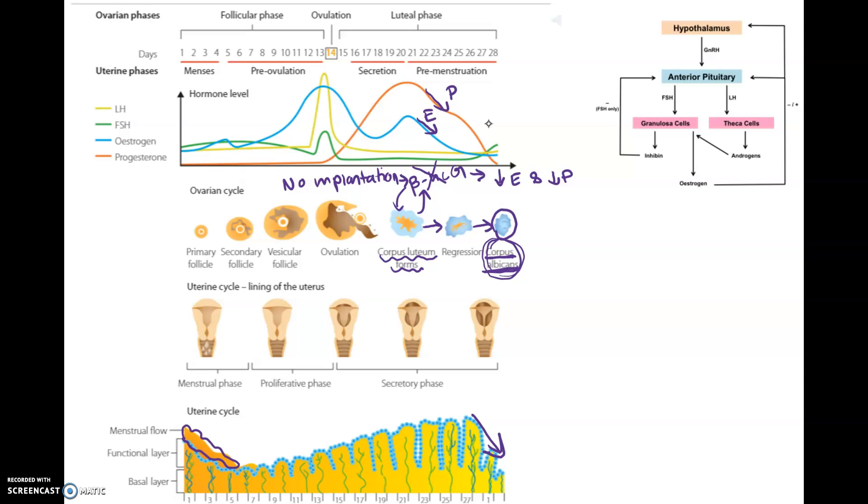To sum it all up, the way you approach this graph is you should note that estrogen will slowly increase to about day 14, and then it suddenly causes positive feedback and an increase in LH and FSH. You should be able to identify those two hormones.